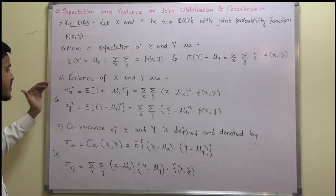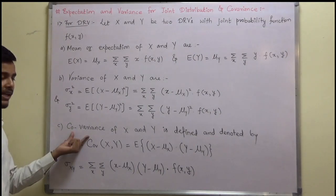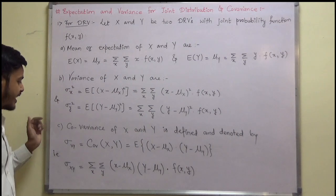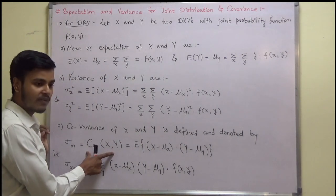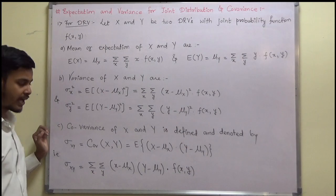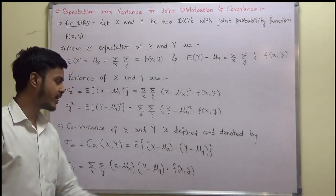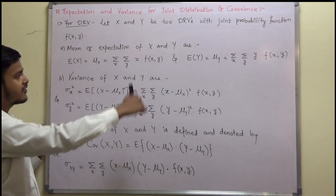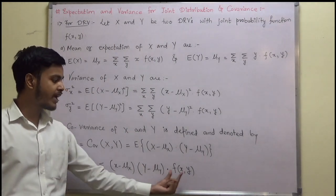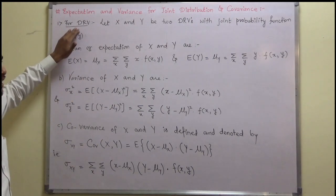Now, after defining the mean and variance for the discrete random variables x and y, let us define the covariance. Covariance is defined for two random variables, and it is denoted by cov of x, y. It is defined as expectation of (x minus mu x) times (y minus mu y), that is double summation of (x minus mu x)(y minus mu y) times f of x, y — making use of the definition of expectation.